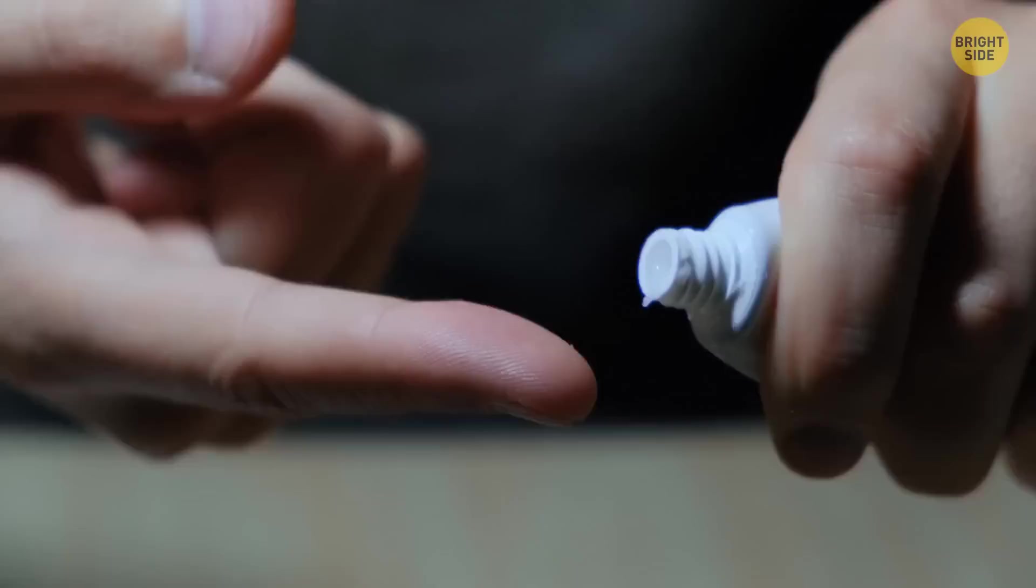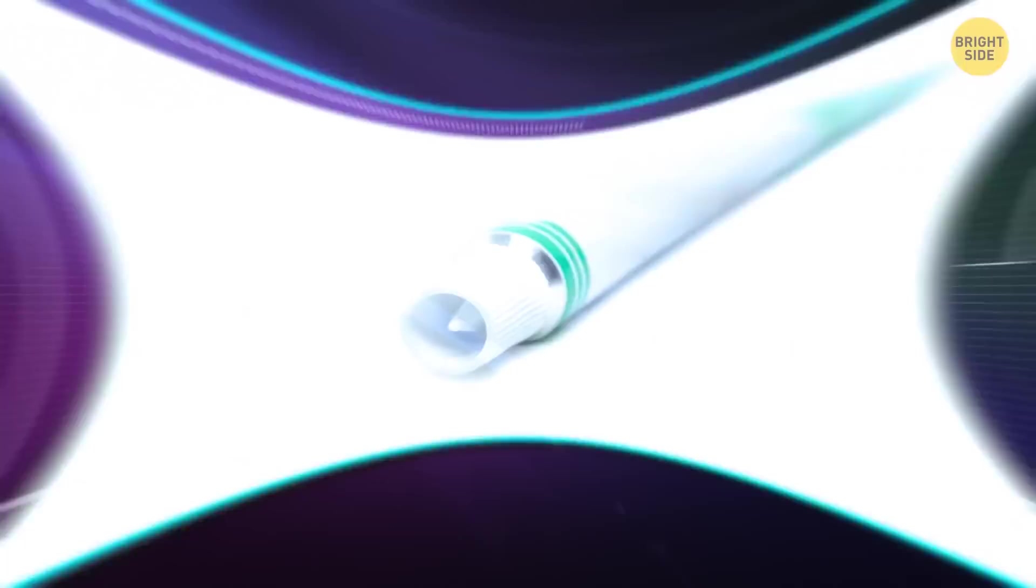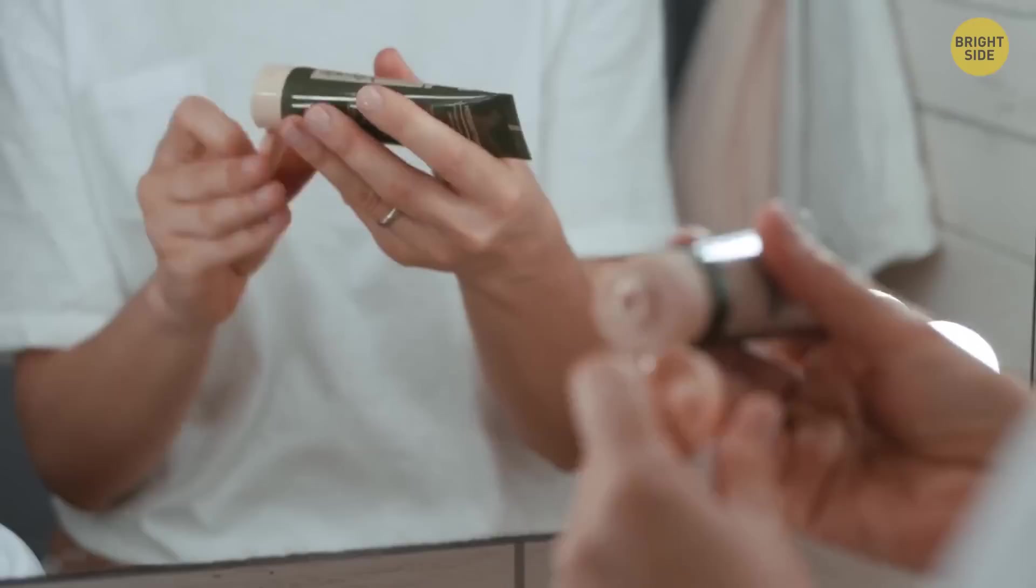Another little thingy we often neglect is a point on an ointment cap. Most tubes are usually sealed with a plastic film or foil, and opening it with your fingernails isn't the best idea. A point easily opens even the most safely sealed tube.